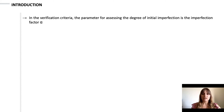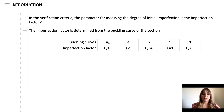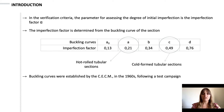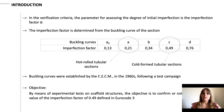In the verification criteria, the parameter for estimating the degree of initial imperfections is the imperfection factor alpha. This imperfection factor is determined by the five buckling curves. Buckling curve A is used for hot-rolled tubular sections, so an imperfection factor of 0.21, and buckling curve C for cold-formed tubular sections, so an imperfection factor of 0.49. These buckling curves were established by the European Convention of Steel Constructions in the 1960s. Based on experimental tests, our objective is to confirm or not the conventional value of 0.49 for cold-formed tubular sections.